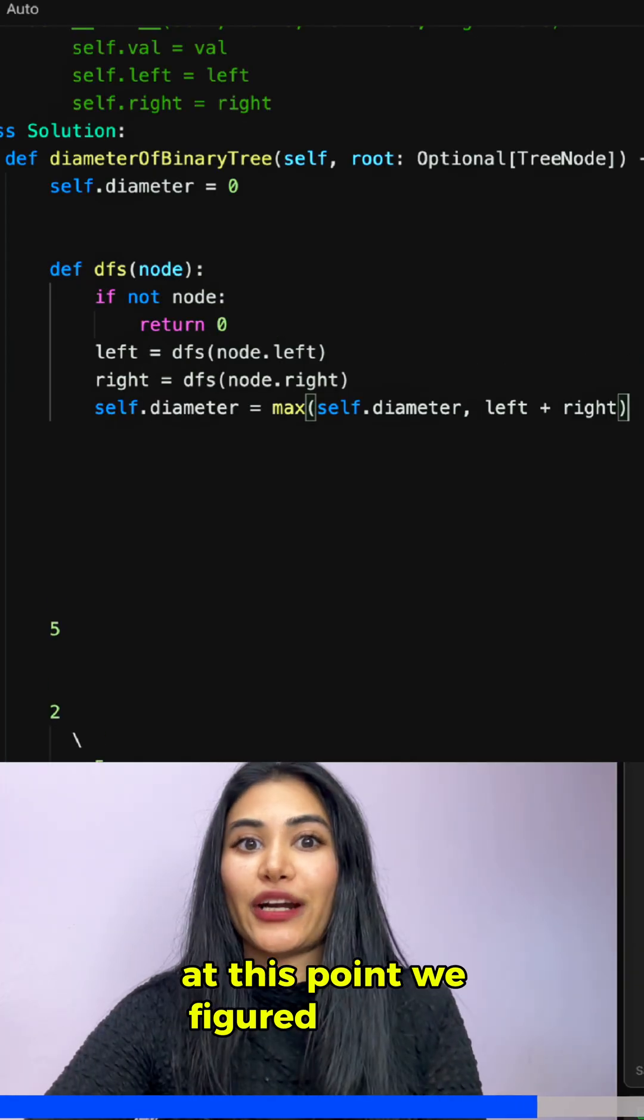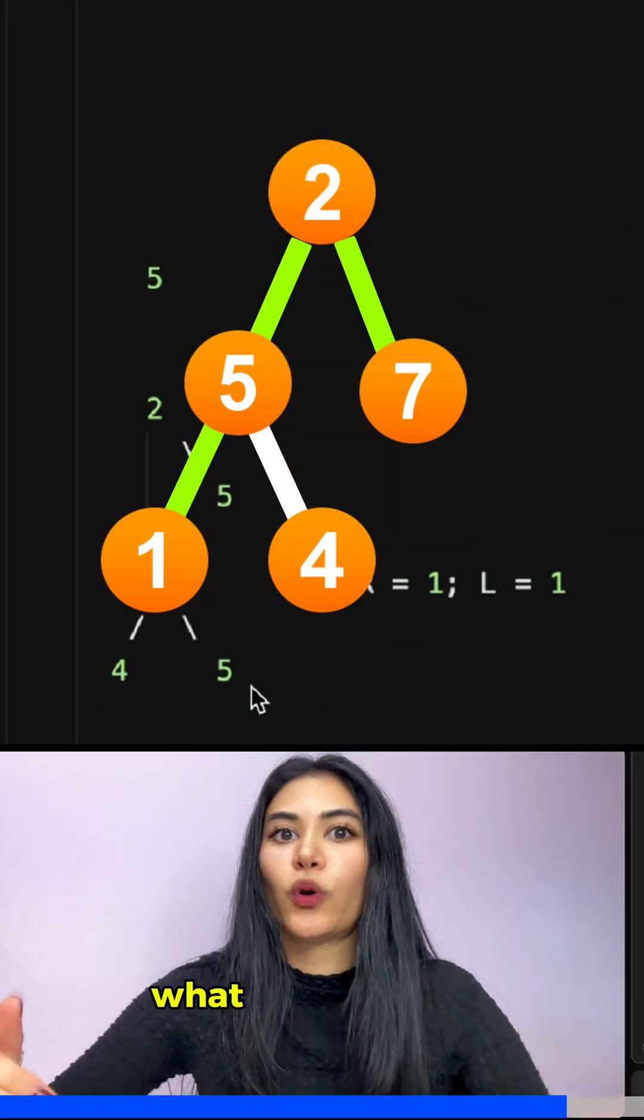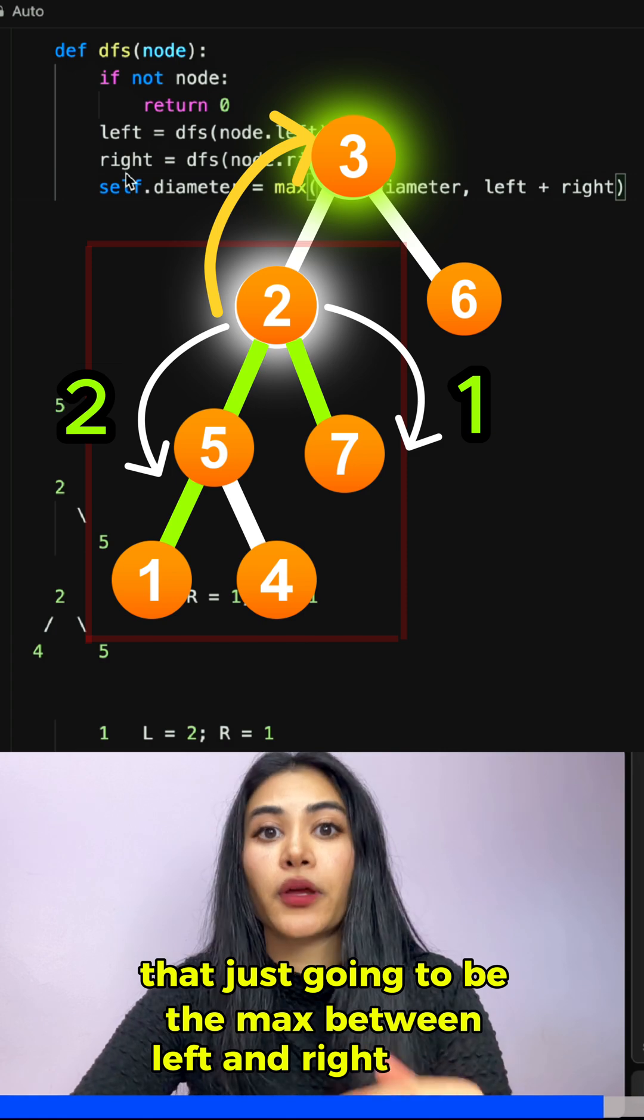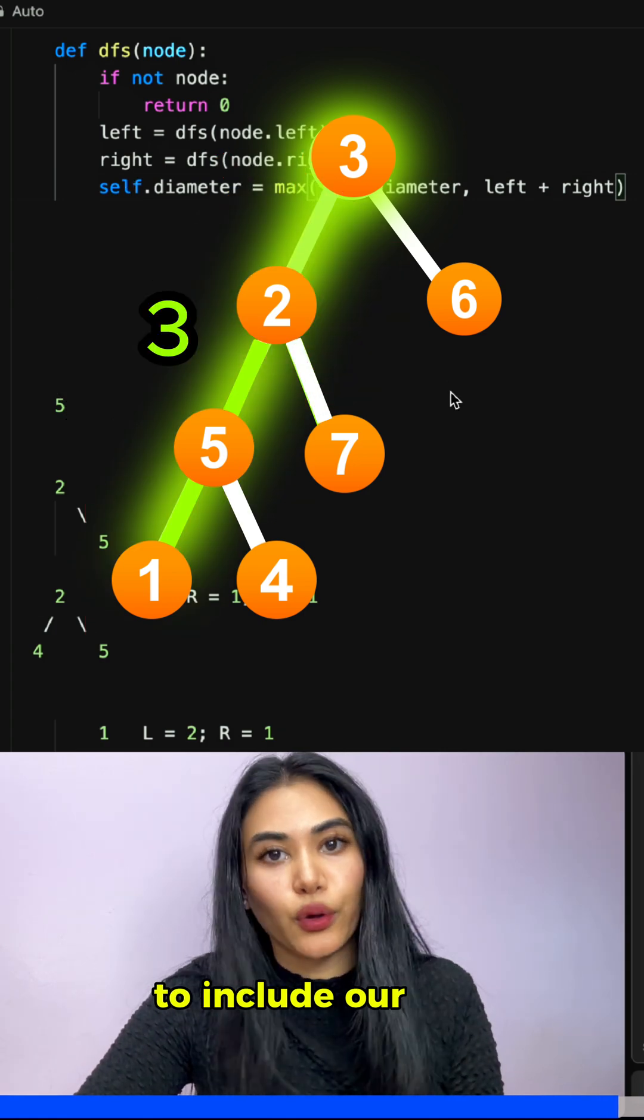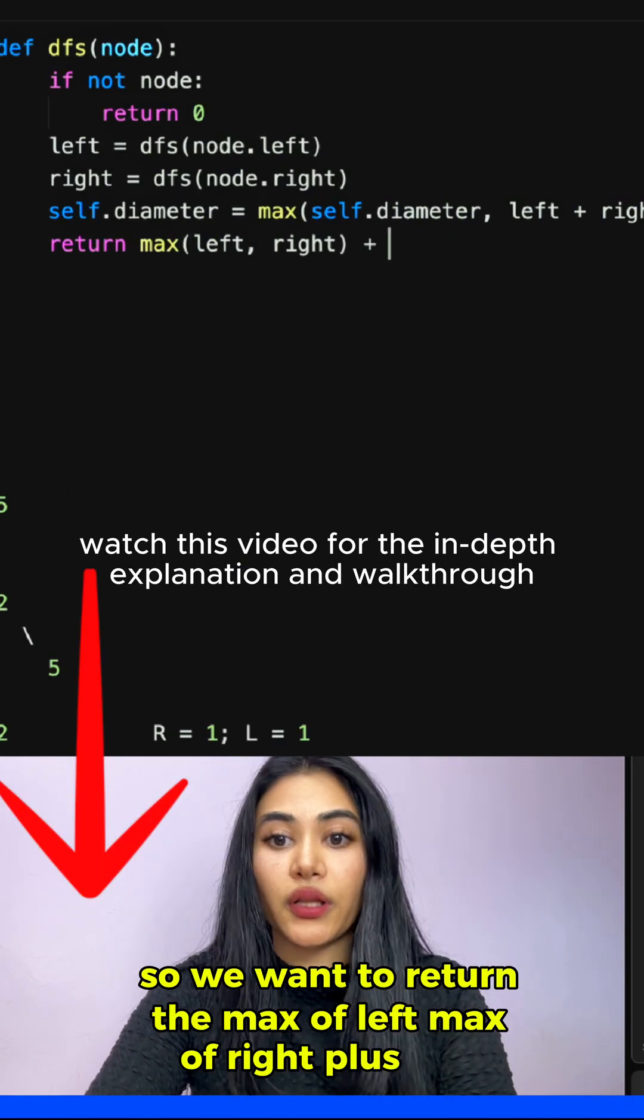At this point we figured out the largest path length we can make through a given node. What do we want to return to our caller? That's just going to be the max between left and right, plus one to include our own node. Return the max of left, max of right, plus one.